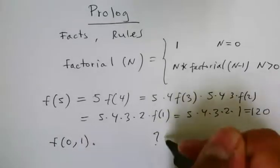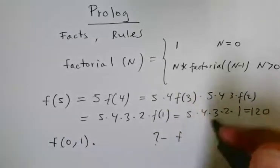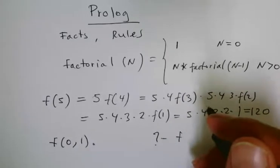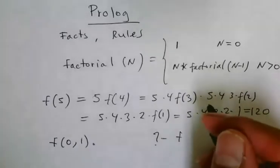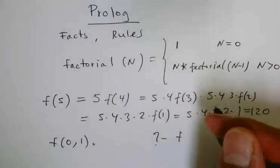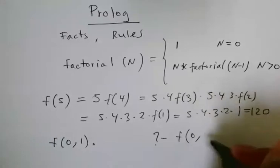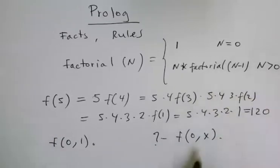And for example, in my query system I'm asking, okay, what is the factorial of 0? Give me the answer in x. So it's going to unify that. There is a 0, then x must be 1. So that's the way that I'm going to get the answer.